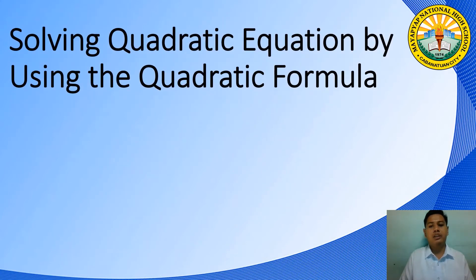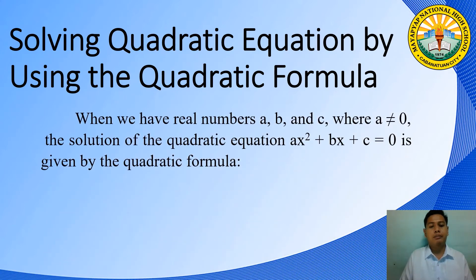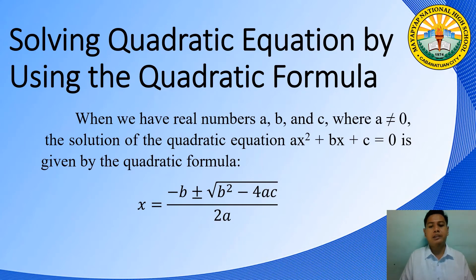We are done with the first three methods. The fourth and last method in solving quadratic equations is by using the quadratic formula. When we have real numbers A, B, and C where A is not equal to 0, the solution of the quadratic equation Ax squared plus Bx plus C equals 0 is given by: X is equal to negative B plus or minus the square root of B squared minus 4AC, all over 2A.